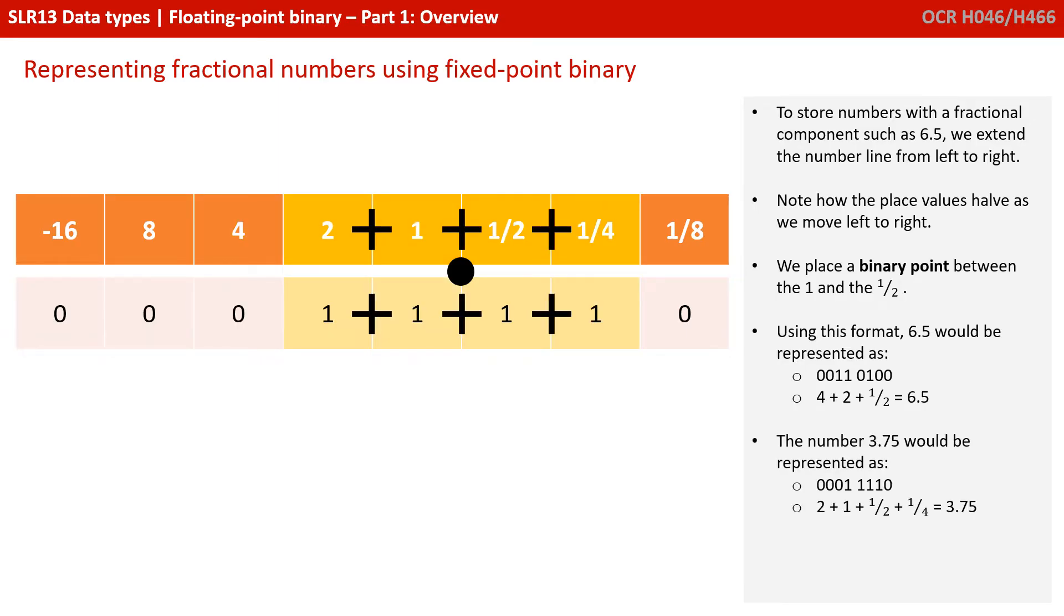The number 3.75 would be represented as 0001 1110. So a 2 plus a 1 is 3, plus a half is 3.5, plus a quarter is 3.75.